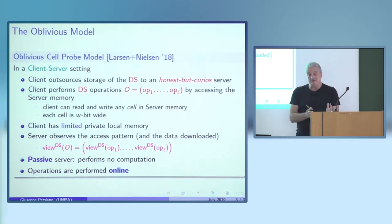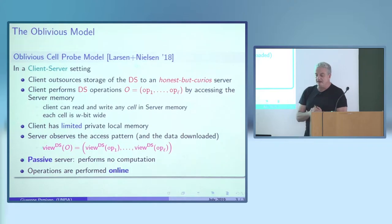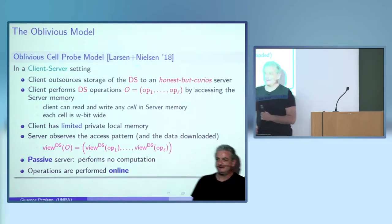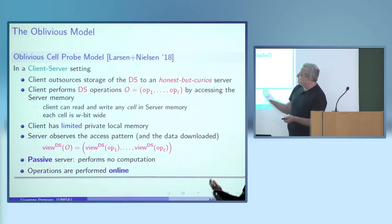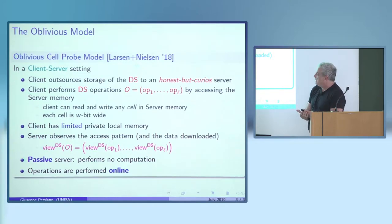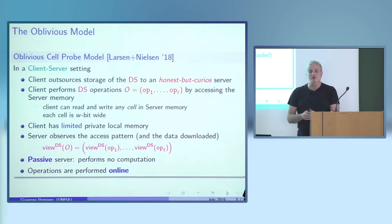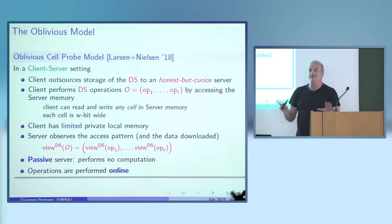The client has limited private local memory that can be used to keep keys or some data from the data structure. The server observes the access pattern for each operation. The view of the server for operation i consists of all the cells that were probed during that operation.